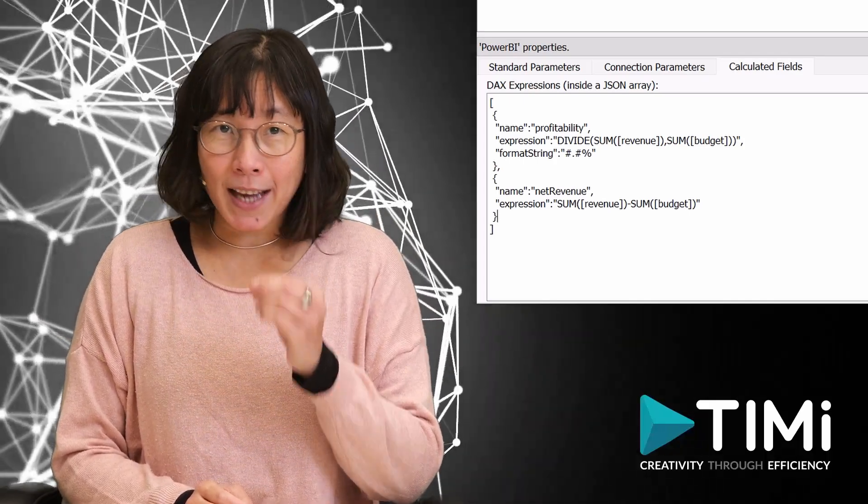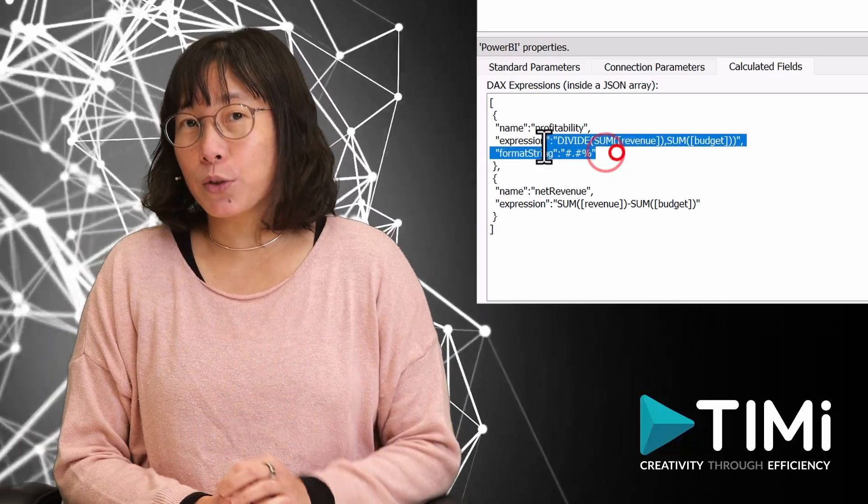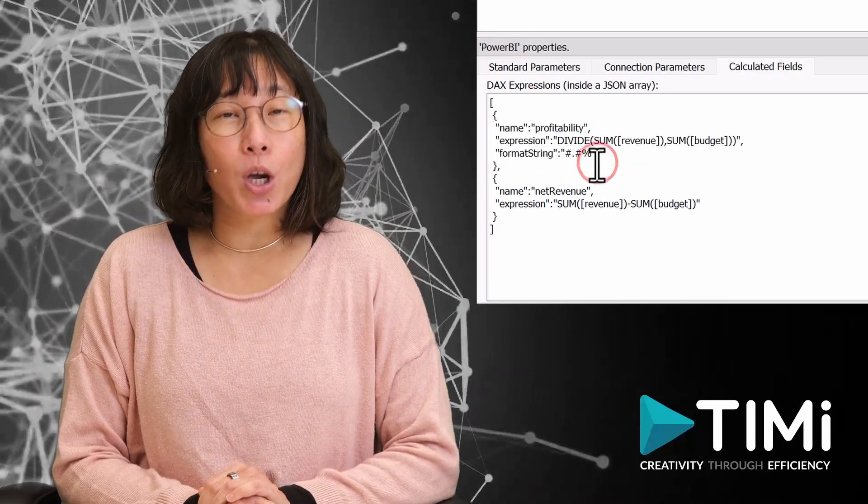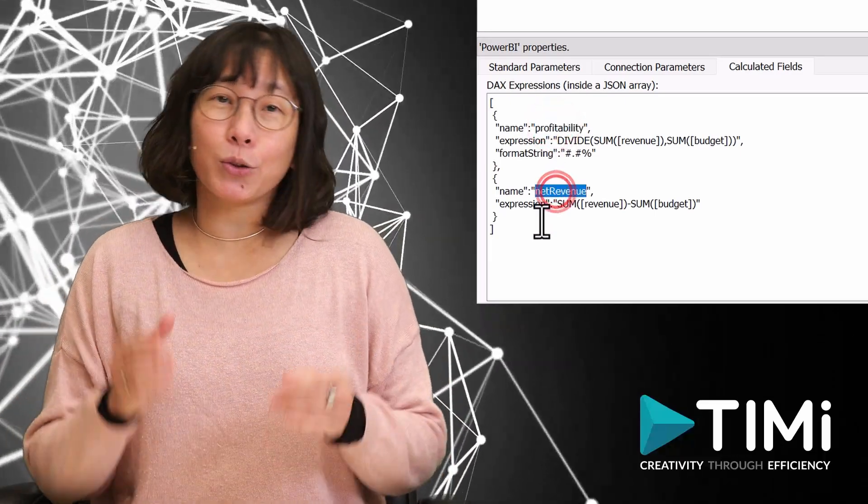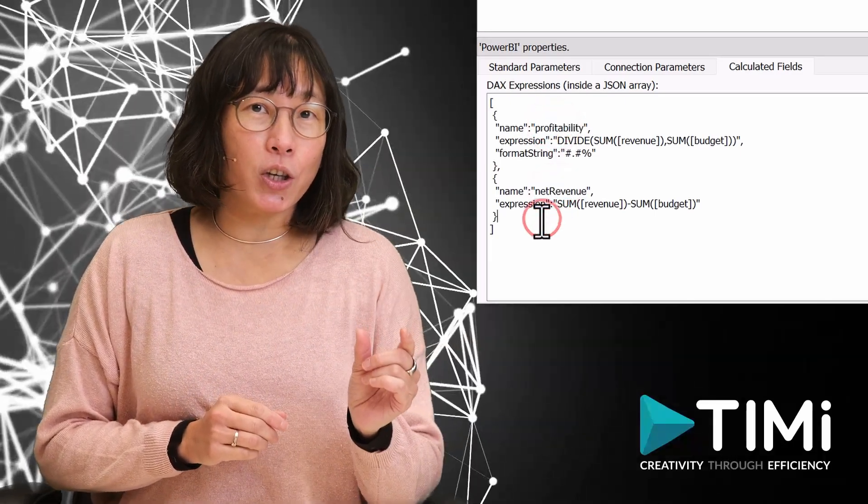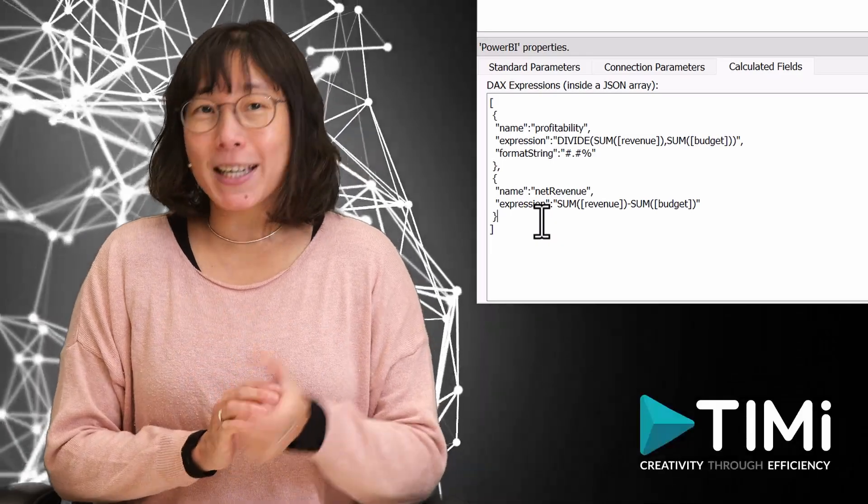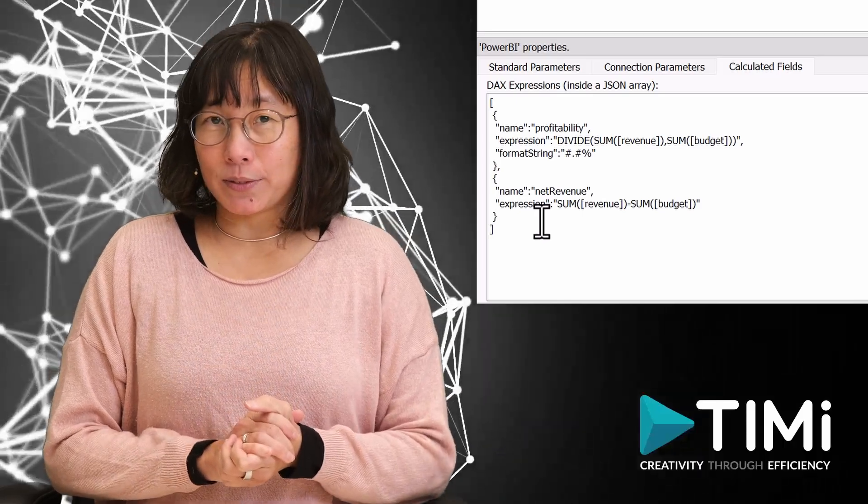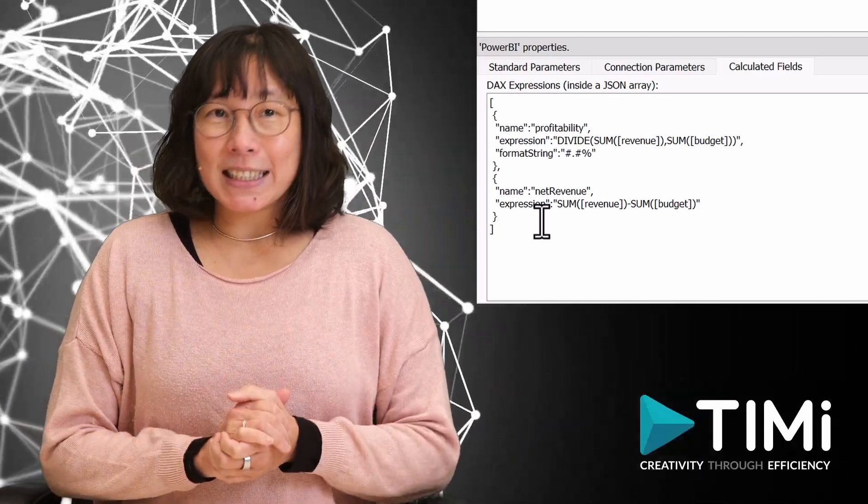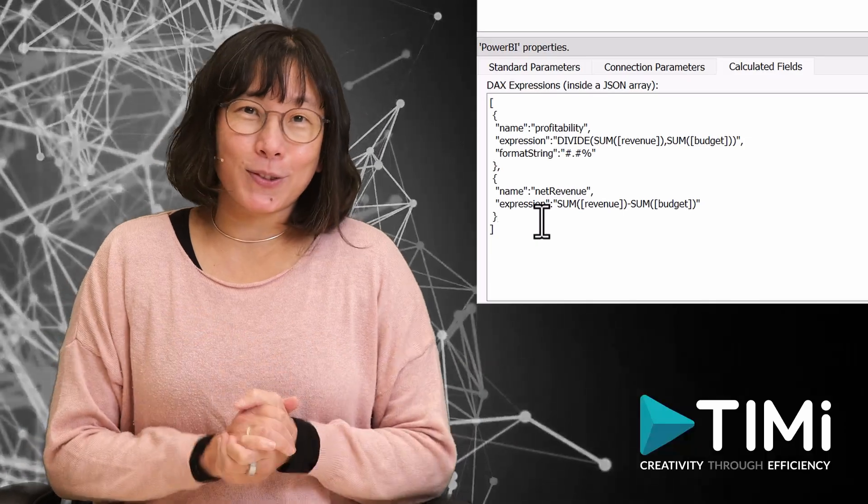There is a notable difference between these two calculated fields. You must use a DAX expression to compute the first field named profitability, while in opposition, you could have just used Anatella to simply create an additional column named net revenue inside the dataset to get the same result as the net revenue calculated field. You don't really need to use DAX for this second field.